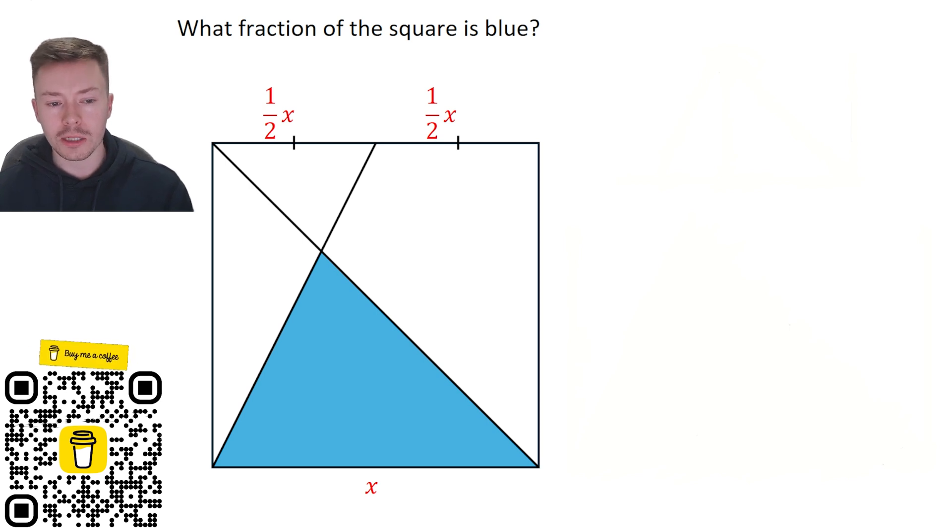Now the next thing to notice about these two triangles is that actually we've got what's called alternate angles. Well, the top of the square and the bottom of the square are parallel sides, and so what we have got is some alternate angles, and I can show you that here.